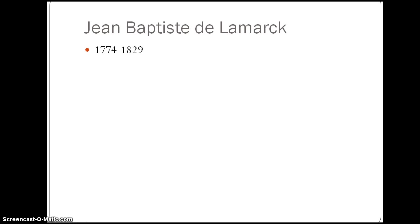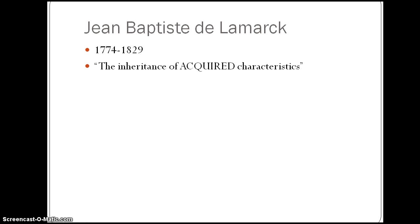Lamarck was born in the late 1700s and his theories were largely ignored and attacked during his lifetime. But in fact, Darwin and other scientists called him a great zoologist and revolutionary evolutionist. Darwin said Lamarck was the first man whose conclusions on the subject excited much attention. Lamarck came up with a theory of inheritance through acquired characteristics.